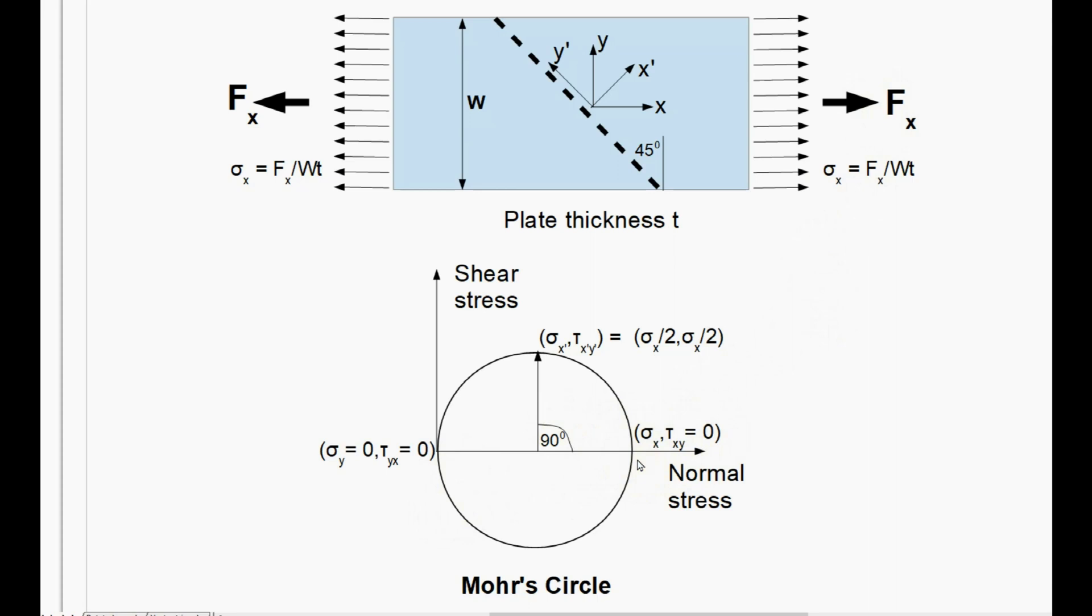Now the thing about Mohr's circle, the angle you measure on the circle is double what you have on the physical specimen. So to show what we have in the Y direction, instead of going 90 degrees, we actually go around 180 degrees, there's no stress acting across the plate, so sigma Y is 0 and tau Y is 0.